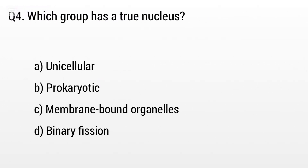Question 5. Which group has a true nucleus? Option A: Unicellular, B: Prokaryotes, C: Membrane-bounded organelle, D: Binary fission. The right answer is option C, membrane-bounded organelle.